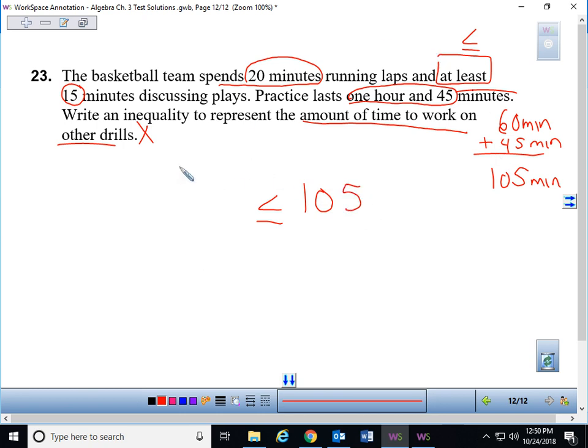And let's just add what we can because it added up is supposed to give me my entire practice. So I have the unknown amount of time for my other drills plus the 20 minutes of laps plus the 15 minutes of discussion. This right here is the first part. The other part to get the other part of your extra credit was to solve the inequality. Well, let's combine like terms. 20 plus 15.